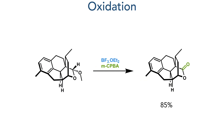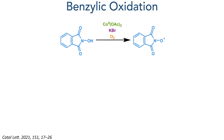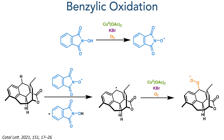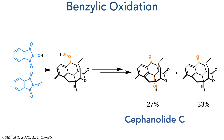To access cephanolide C, they started with the acetal intermediate that lacked the phenolic methoxy group and oxidized it using boron trifluoride and MCPBA as before. This was then taken forward to a benzylic oxidation. N-hydroxyphthalimide first forms a radical by reaction with cobalt(II) acetate, potassium bromide, and oxygen. This abstracts a hydrogen atom from the benzylic position and the radical that is formed reacts with another equivalent of dioxygen. The peroxy radical that is formed reacts with another equivalent of N-hydroxyphthalimide, regenerating the radical, and further oxidation of this peroxide forms a ketone. This formed the mono-oxidized product in a 33% yield together with a 27% yield of cephanolide C, which had been further oxidized at the tertiary benzylic position.